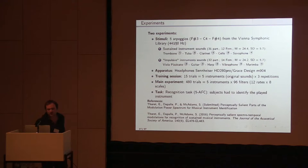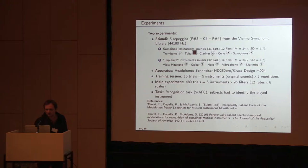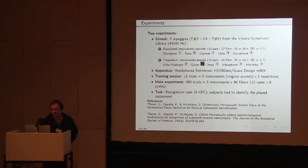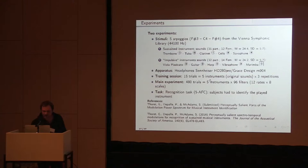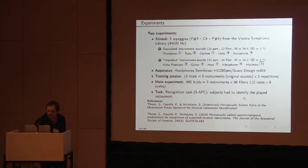We did two experiments based on this methodology. In each one we used five arpeggios from the Vienna Symphonic Library. In the first experiment, we focused on sustained instrument sounds, like the trombone, the tuba, clarinet, cello, and saxophone. In the second experiment, we focused on what we call impulsive instrument sounds, like the viola pizzicato, the guitar, harp, and marimba. We asked musicians to identify a filtered version of the original stimuli. Each design of the experiment was composed of 480 trials — five instruments multiplied by 96 filters, which correspond to 12 temporal rates and 8 spectral modulations. We asked subjects to identify the played instrument.